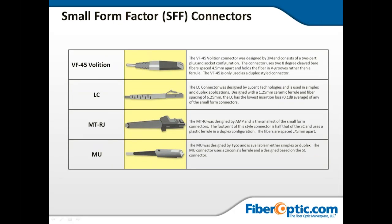There's also an older CF-45 design — a 3M design — with 283 cleave bare fibers placed 4.5 mm apart in a V-groove mechanical connection. Then you have the LC, MTRJ, and MU connectors, which are all 1.25 mm connectors. When I say 1.25 mm or 2.5 mm, that's the diameter of the ferrule used in the connector — that's what it comes down to.